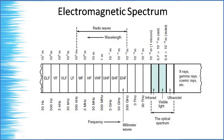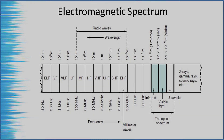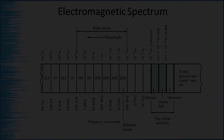The frequency bands are: VLF (very low frequency), LF (low frequency), MF (medium frequency), HF (high frequency), VHF (very high frequency), UHF (ultra high frequency), SHF (super high frequency), and EHF (extremely high frequency). These are the different frequency bands used in communication systems.